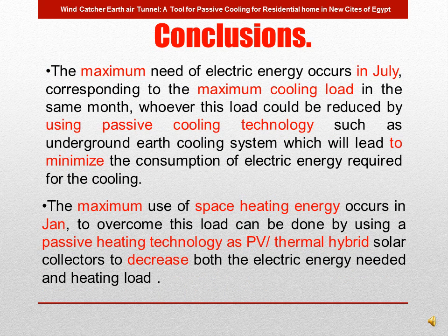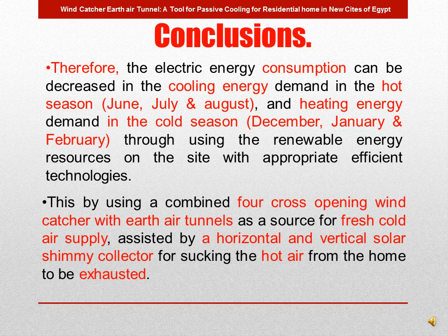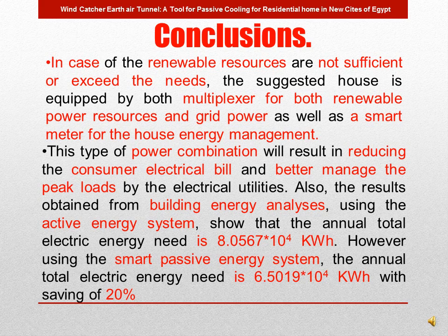The maximum need for electric energy occurs in July, corresponding to maximum cooling load, which can be reduced by using specific cooling techniques such as underground earth cooling to minimize cooling energy consumption. Maximum space heating occurs in January; to overcome this load, passive heating technology such as PV thermal hybrid solar collectors can decrease both the electric energy needed and the heating load. The suggested house uses a cross-opening windcatcher with earth tunnel for fresh cold air supply, assisted by horizontal and vertical solar chimney collectors. When renewable energy sources are insufficient, the house is supported by a multiplexer combining renewable energy sources and grid power, plus a smart meter.